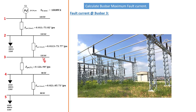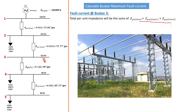From the previous tutorial, we need to add all the per unit impedance from the generator to line one and line two in order to get the current on bus bar three, as the current will take this particular path. The total per unit impedance will be the sum of Z per unit of the generator, line one, and line two as shown below. Adding those, we have 0.24j, 0.011 at an angle of 73.82°, and 0.0113 at an angle of 73.77°.